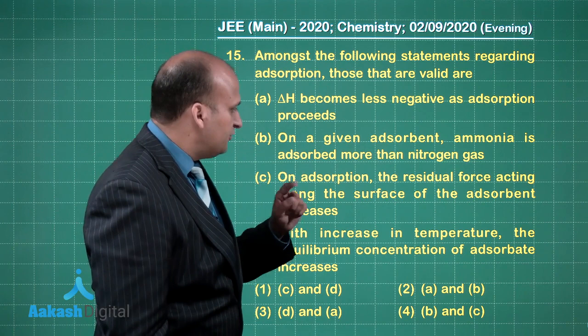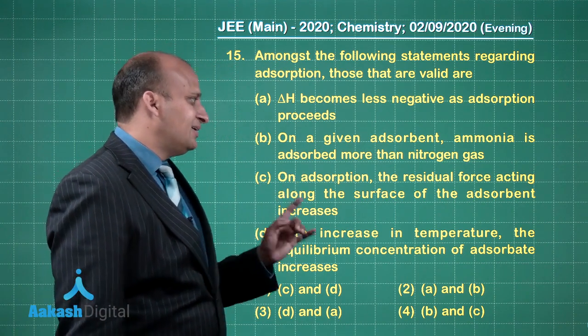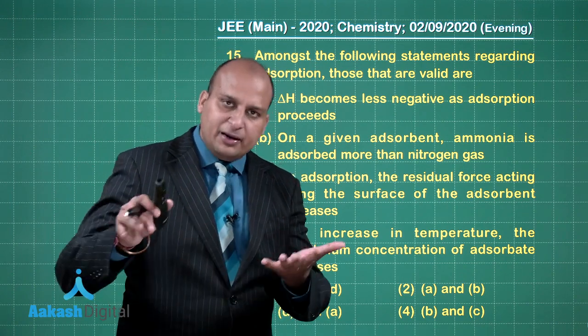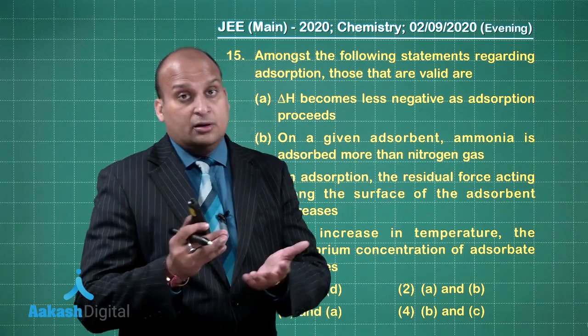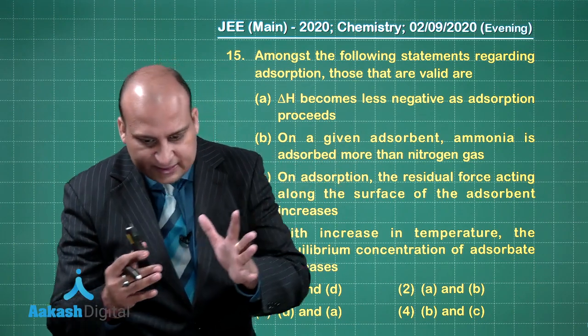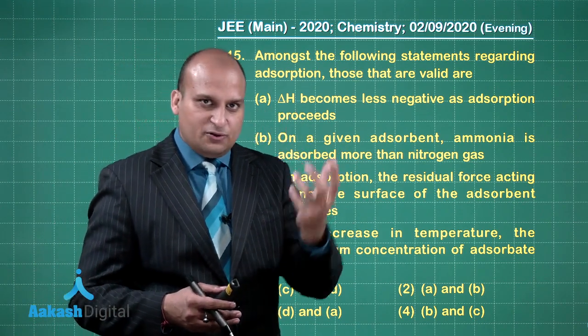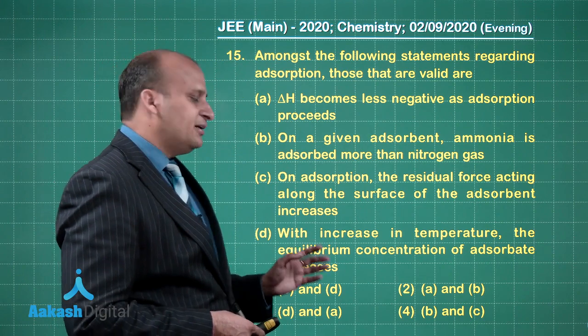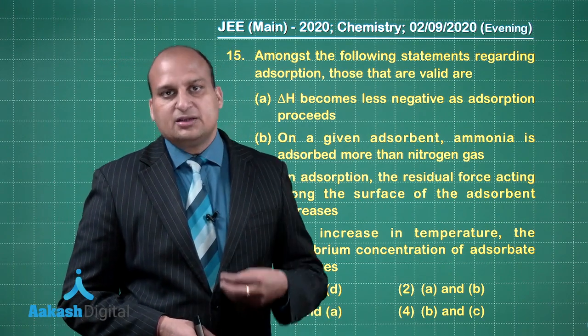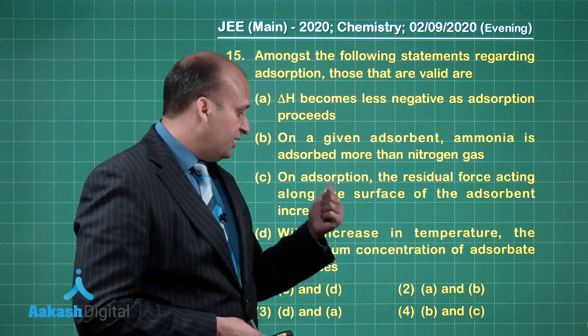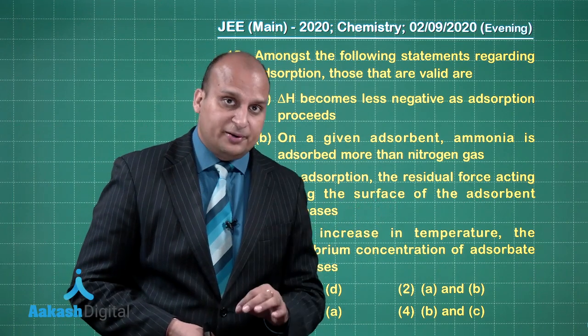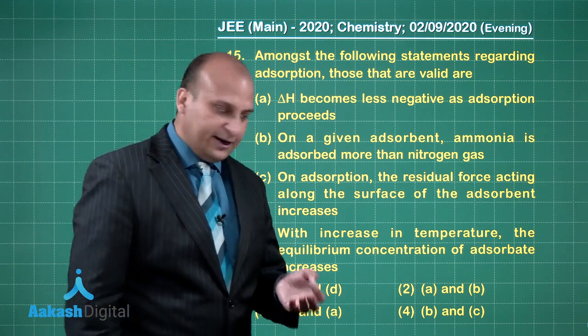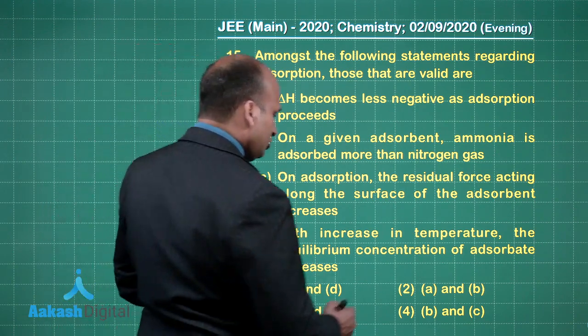On adsorption, the residual force acting along the surface of the adsorbent increases - no, no, no. It will, in fact, decrease because the adsorbate is coming and adsorbing on the surface of the adsorbent. So what is happening? The residual force is actually decreasing, not increasing. The residual force is decreased by this process of adsorption. With increase in temperature, the equilibrium concentration of adsorbate increases - no, because the adsorption is an exothermic process. So in such case, the concentration of adsorbate will decrease with the increase in temperature. So only option A and option B are correct. The right answer should be choice number 2.